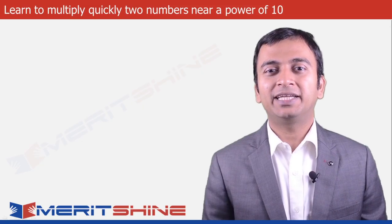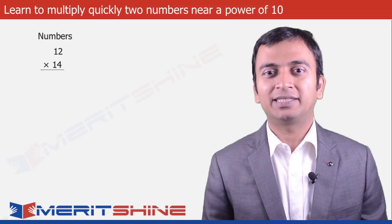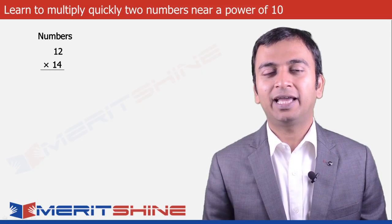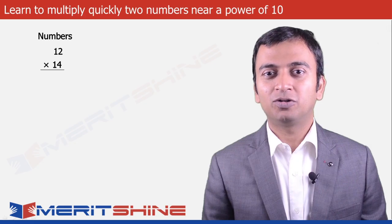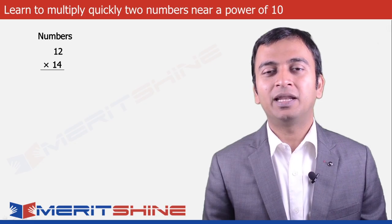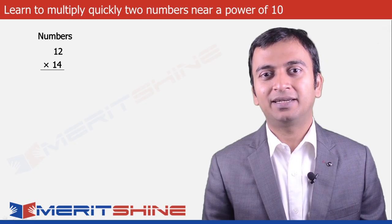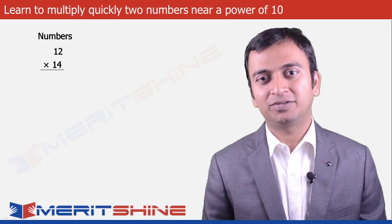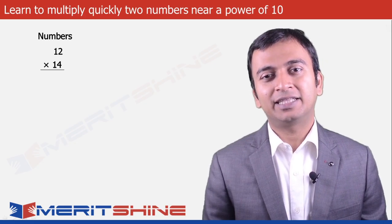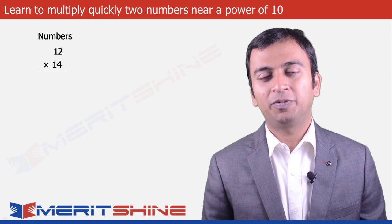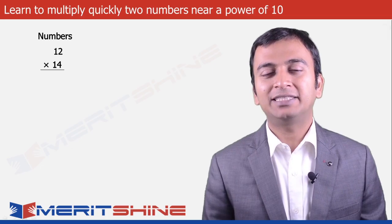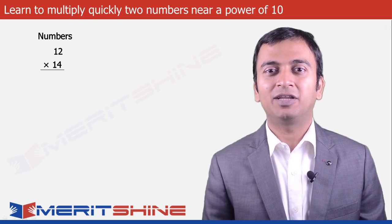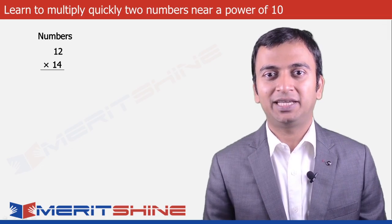Let us begin by taking 12 and 14 as an example. If we look closely at these numbers, they are both close to 10. Numbers such as 10, 100, 1000, 10,000, etc. would be very special to us as they make our calculations much easier.